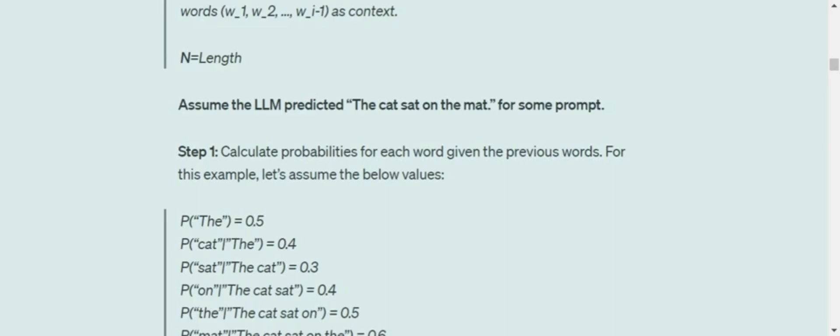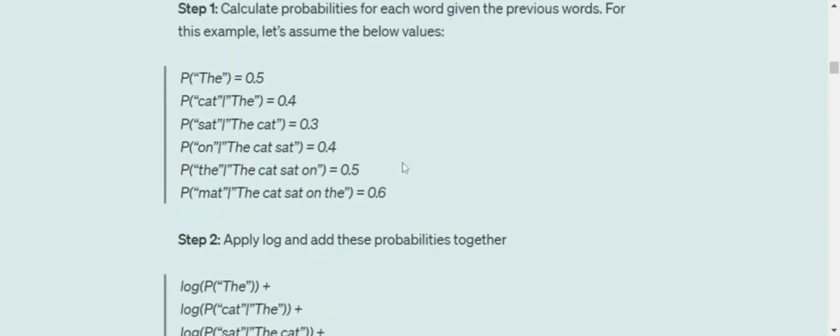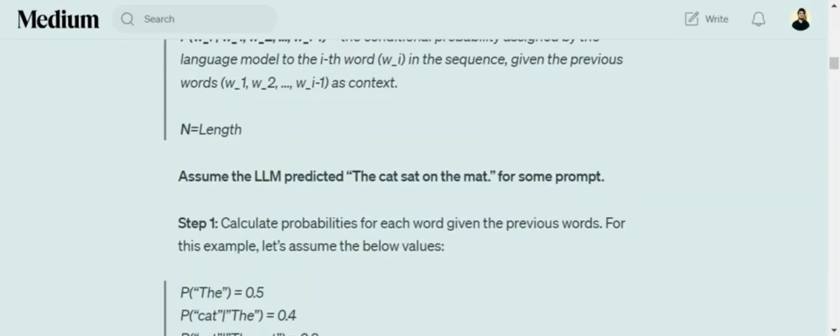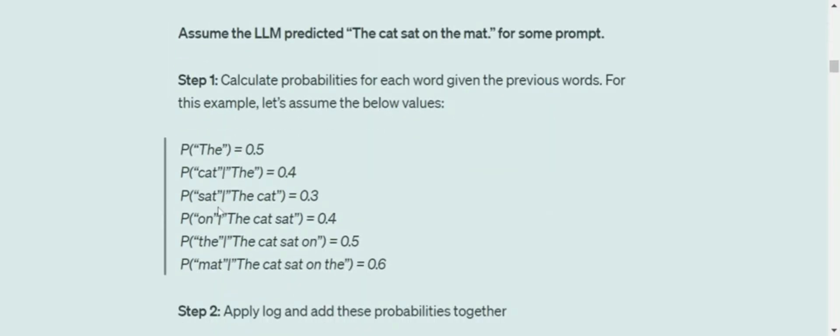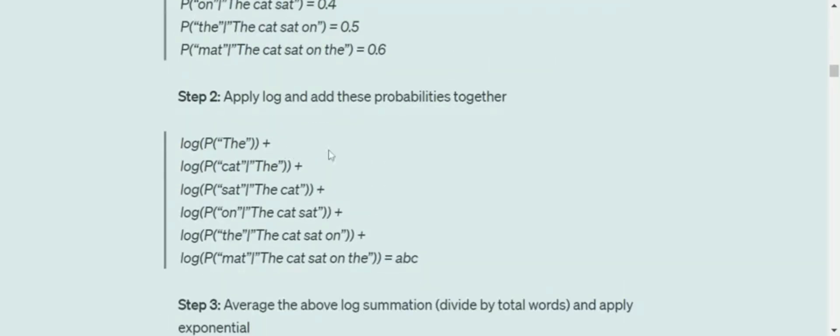Step 1: Calculate probabilities for each word given the previous words. For example, assume P('The')=0.5, P('cat'|'The')=0.4, P('sat'|'The cat')=0.3. We calculate the probability of each word in the sequence given all previous words. Assume we've calculated all these probabilities and apply log and add them together.